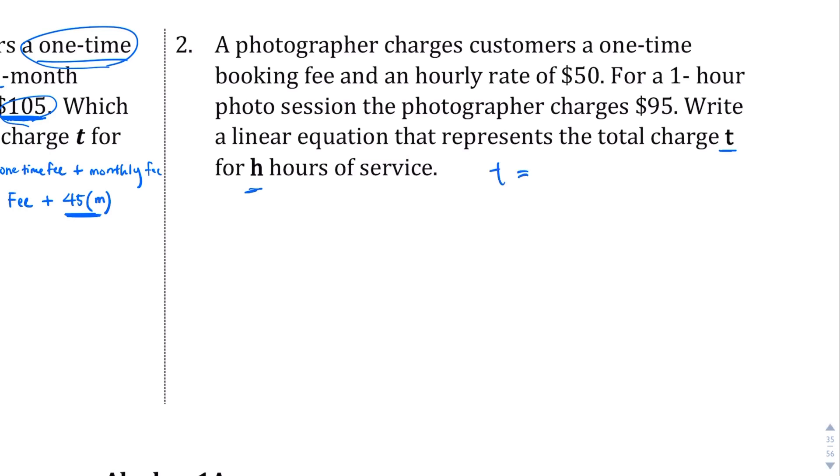The total is going to be the number of hours times the hourly rate. So the hourly rate was what? Hourly rate of $50. So $50 times H. And we don't know what the one-time fee is. We'll call it that for now.